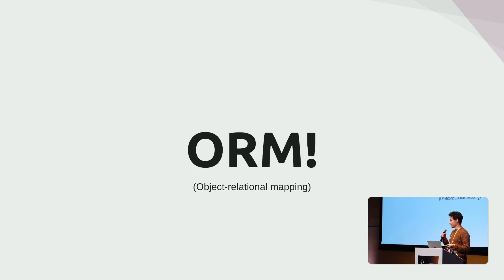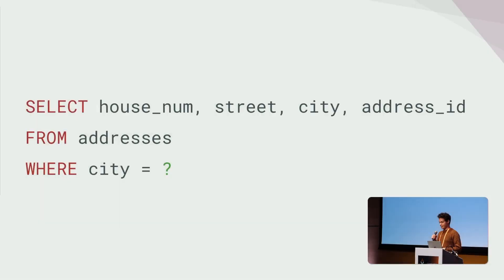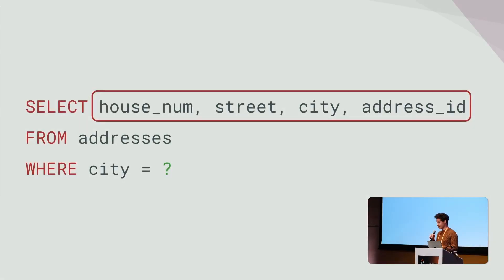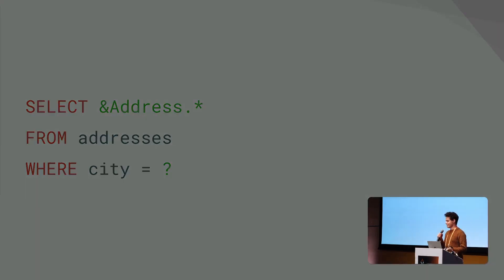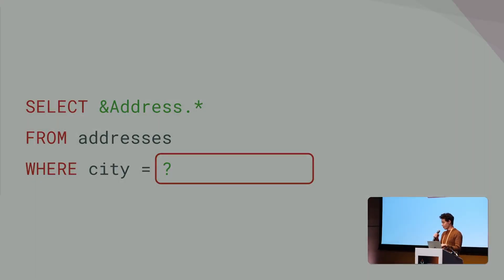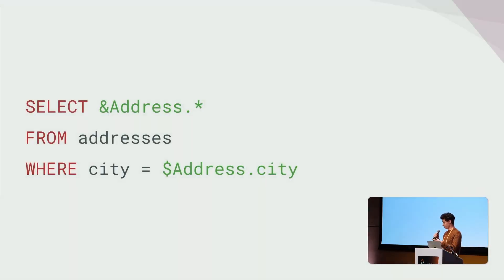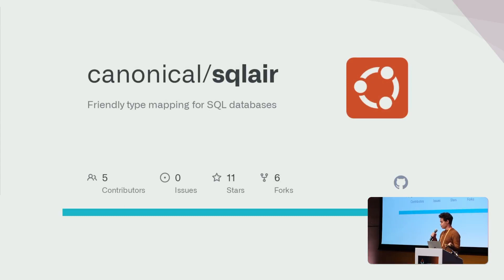What we really want is to write our own SQL queries and get all the benefits of an ORM. We had an idea at Canonical, looked around, no one else had done it, so we implemented it. The core of this idea is that instead of writing out the columns of your SQL query, you instead write the Go struct that you want to put those columns into. Here we have the address struct — the dot-star means we want to fill all the fields of that struct and fetch those from the database. Instead of a positional input placeholder, we write the field in a struct that we want to take that value from.